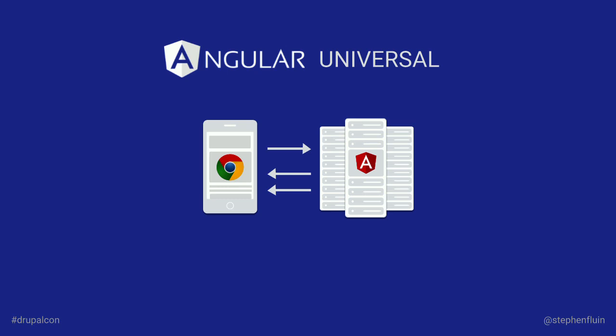Angular Universal is this idea that because we've rebuilt the platform from Angular 1 to Angular 2, we can do a lot of really interesting things. One of those is the ability to run JavaScript code on the server side and pre-render pages in the same way you render them on the client — so on first load, you don't have to wait for any of that rendering. This sounds a little bit weird in a Drupal context, but there are nice ways it can play together.